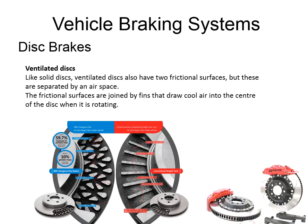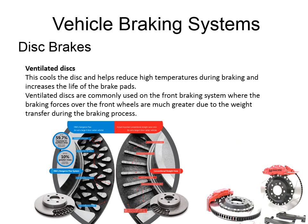On ventilated discs, the two friction surfaces are separated, allowing air to get between them for much faster cooling. The sectioned image shows the most common layout — straight vanes — but other methods of joining the two surfaces are available, including curved vanes. It isn't unusual to see both ventilated and solid discs fitted to the same vehicle: ventilated discs at the front, solid discs at the rear.